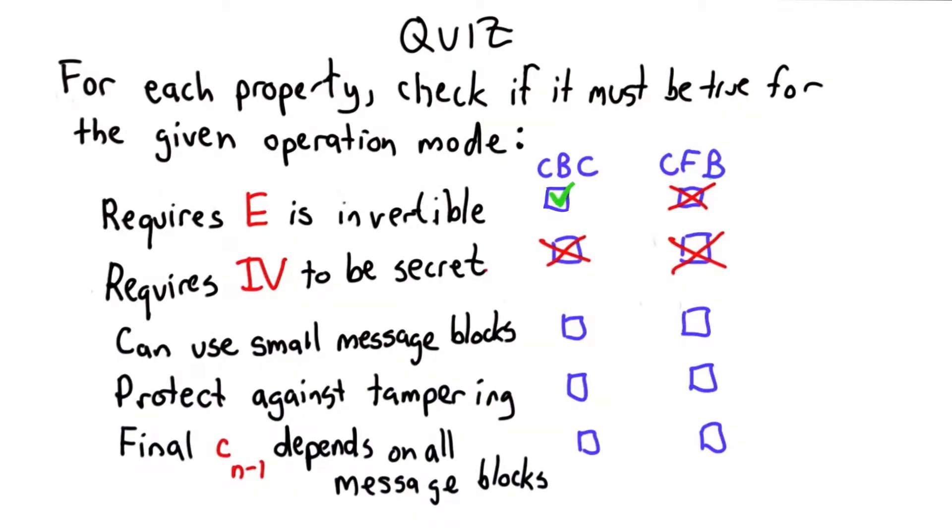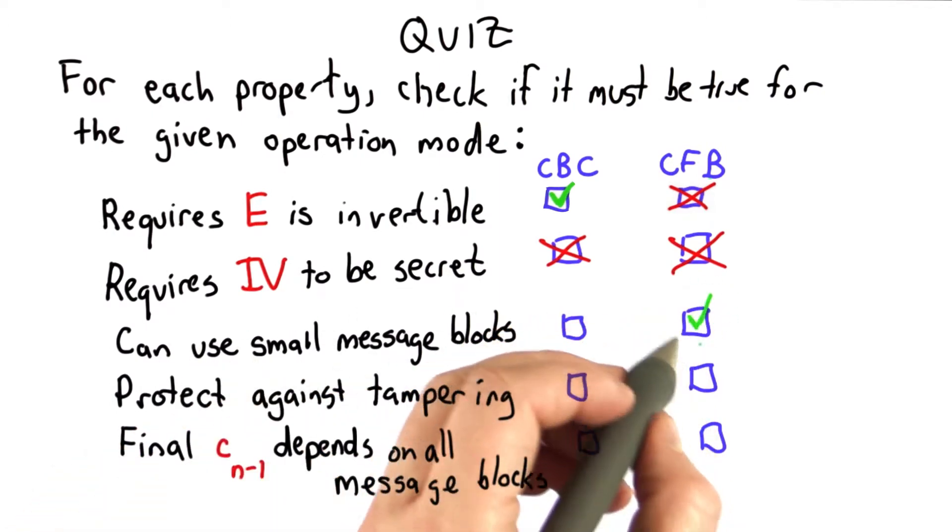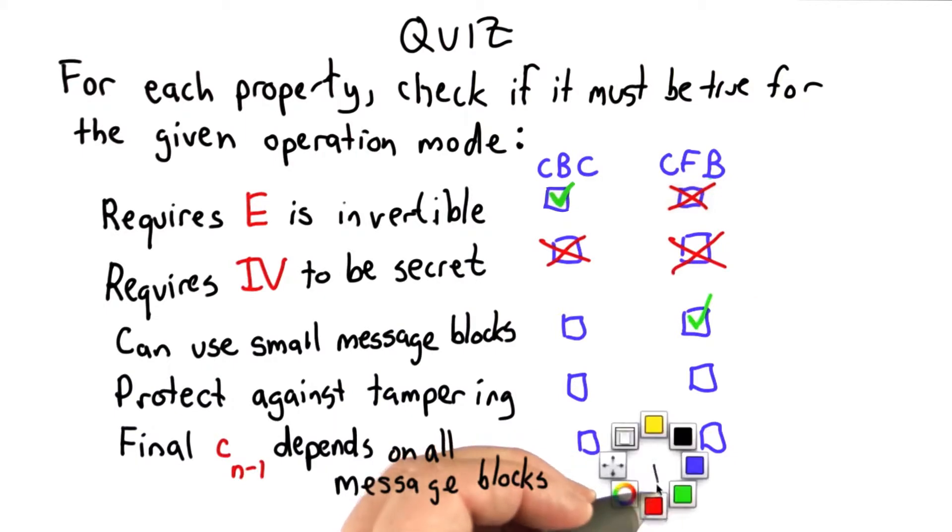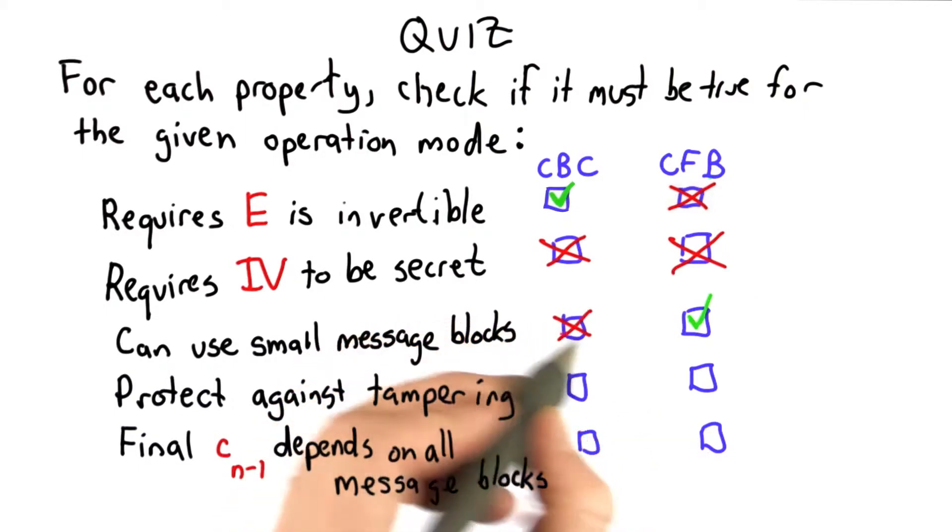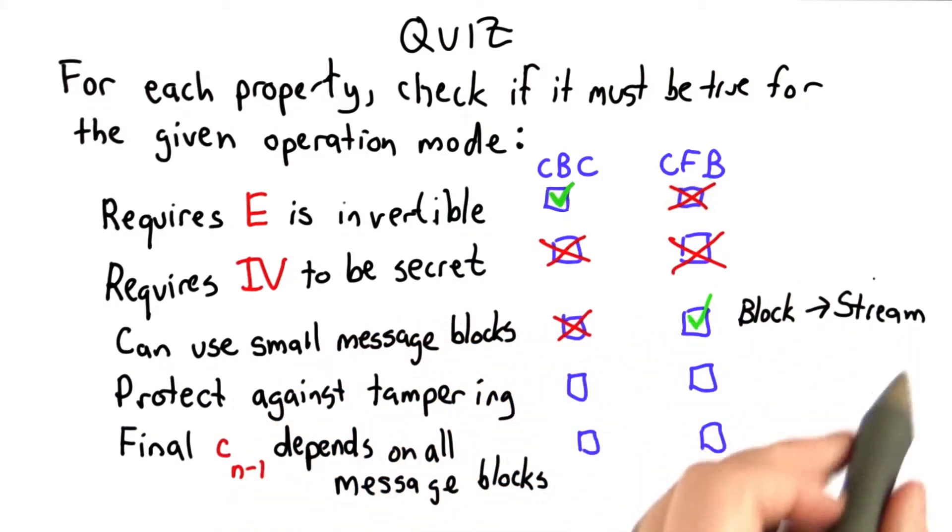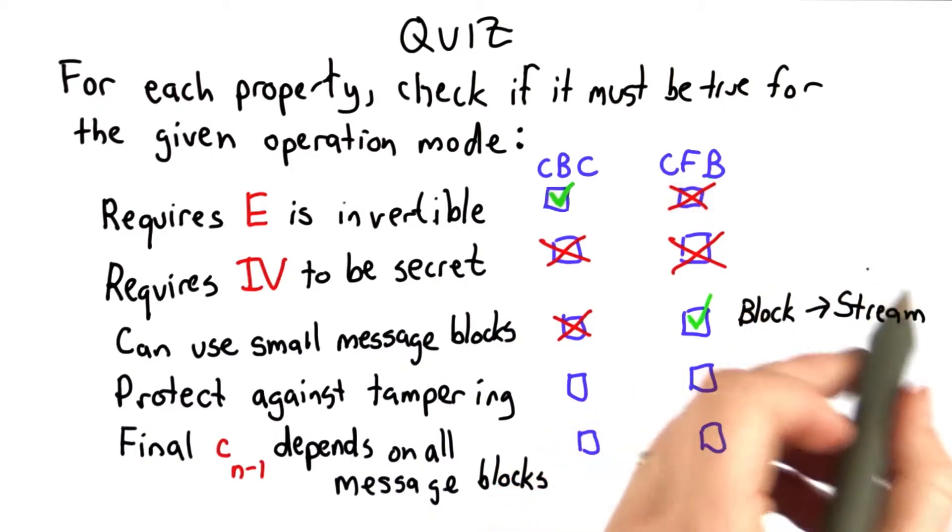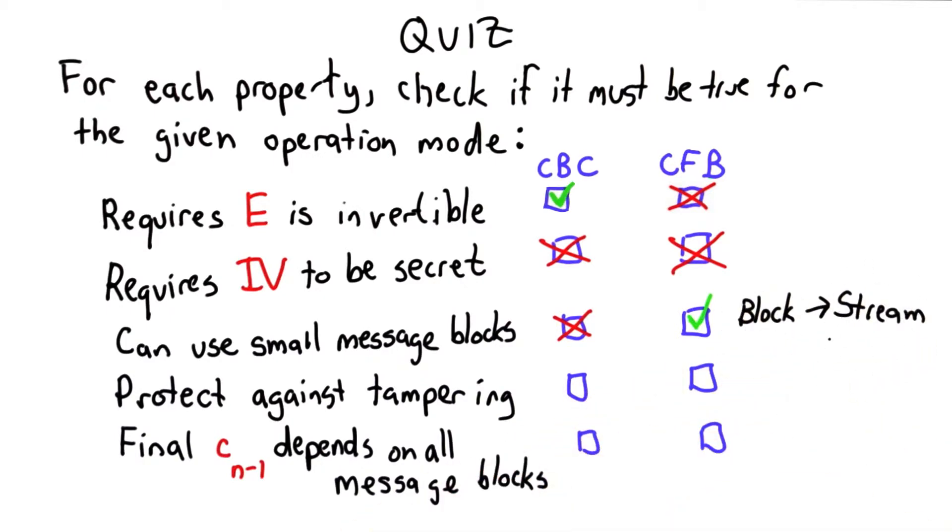The big advantage of cipher feedback mode over cipher block chaining mode is this ability to use small message blocks. We can select the value of s and only encrypt the message in chunks of size s. This means we can use this mode to turn a block cipher into a stream cipher, where we're encrypting messages one byte at a time if we wanted to do that.